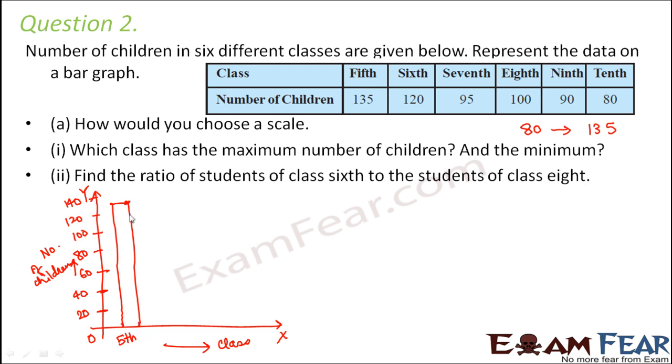Class 7th has 95 students. Gradually the number of students is decreasing so far. So in class 7th, you have 95 students. But in class 8th, again, you have 100 students. So here, the graph has again increased. This is class 8th.